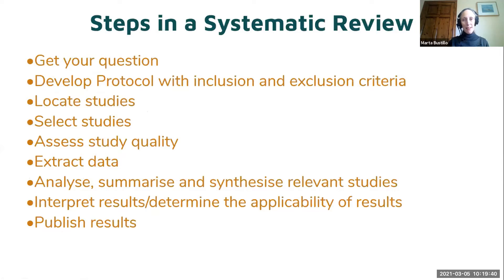These are the main steps in a systematic review. Very importantly: first get your question. Until you have a specific, well-framed question, it's going to be very difficult to go on to the next steps. Then develop a protocol with inclusion and exclusion criteria. Locate the relevant studies. Select the relevant studies. Assess the quality of those studies. Then extract the data. Analyze, summarize, and synthesize the relevant studies. Interpret those results. And then publish them.